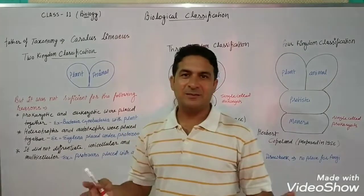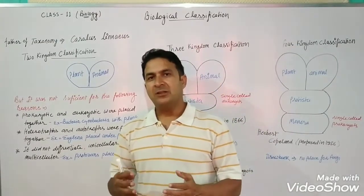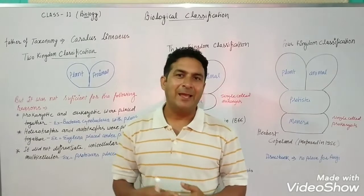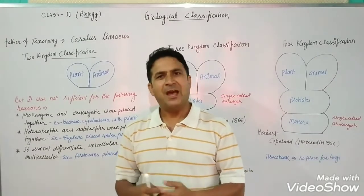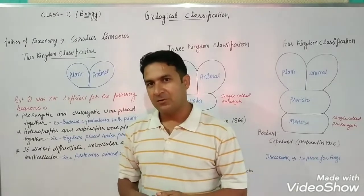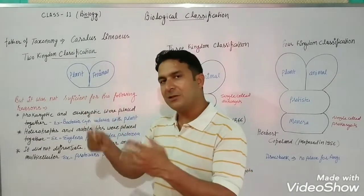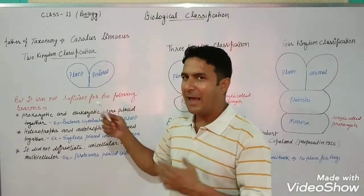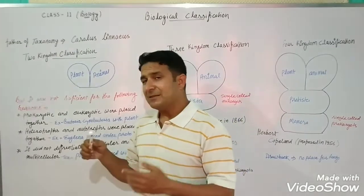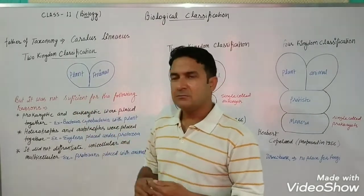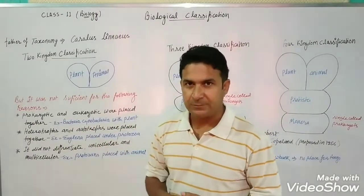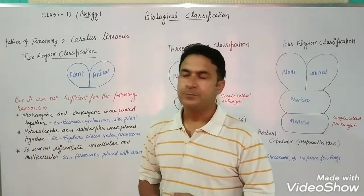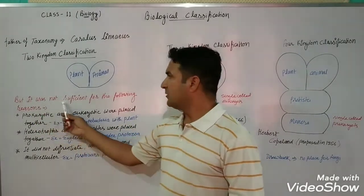However, many organisms exist that have different characteristics — they are not exactly like plants and not exactly like animals. They were forced into one of these two kingdoms, but these two kingdoms were not sufficient to give accurate information about all types of organisms.